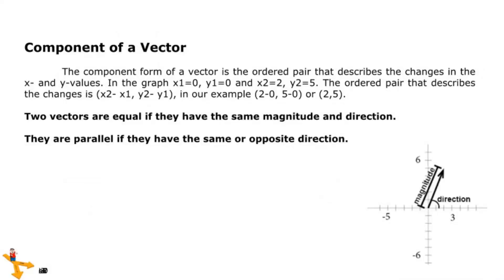Component of a vector. The component form of a vector is the ordered pair that describes the changes in the x and y values. We can say that two vectors are equal if they have the same magnitude and direction, or when they are parallel if they have the same or opposite direction.